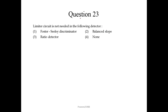Question number 23: a limiter circuit is not needed in the following detector — Foster-Seeley discriminator, balanced slope, ratio detector, or none. All three are FM receivers, and the limiter circuit is not needed in the ratio detector. So the third one is the correct answer.